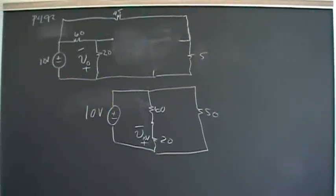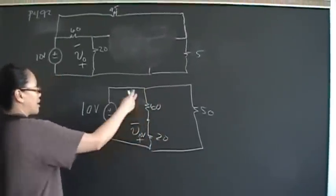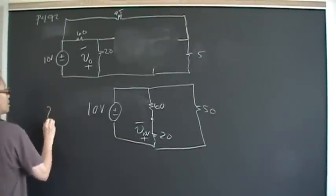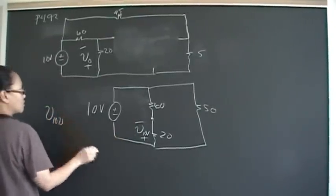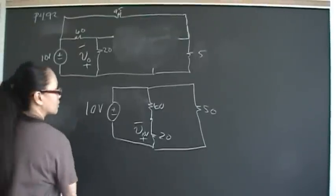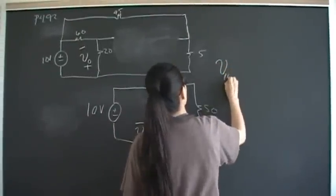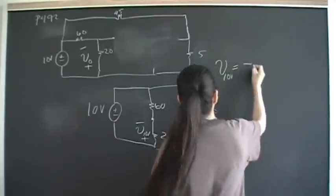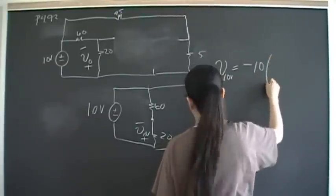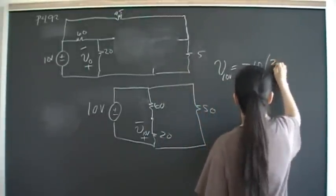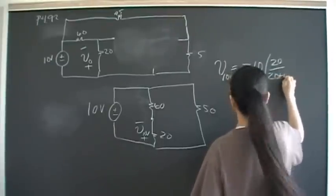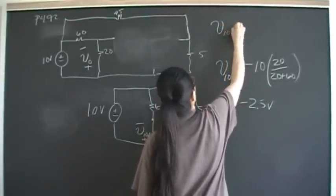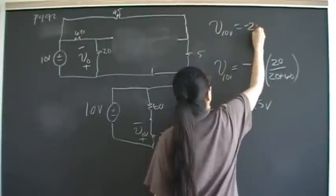Now we have a voltage divider circuit. Since the reference direction is minus to plus — opposite to the source — V10-volts is going to be negative 10 times 20 over (20 plus 60), which gives negative 2.5 volts.